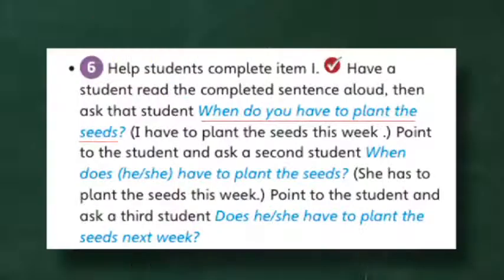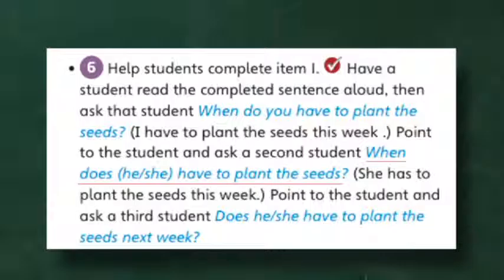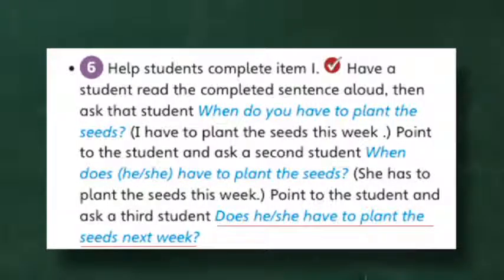For this activity in the student book, the teacher can increase the amount of interaction and practice by asking several students for answers. For example, after one student gives the answer to number one, the teacher asks, 'When do you have to plant the seeds?' Then she asks another student, 'When does he have to plant the seeds?' and 'Does he have to plant the seeds next week?' This is an example of how the teacher can provide additional practice with new language and support communication and learning in the classroom.